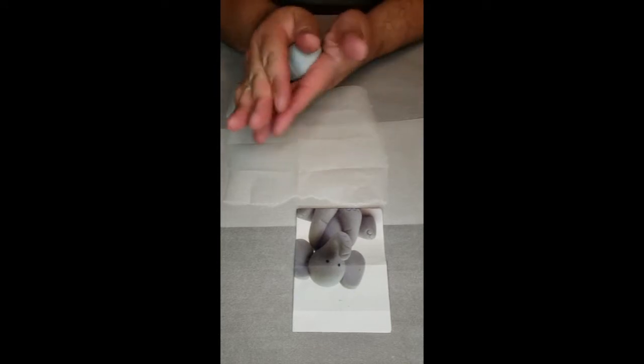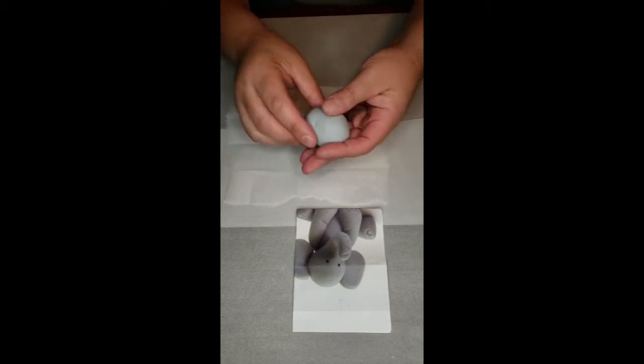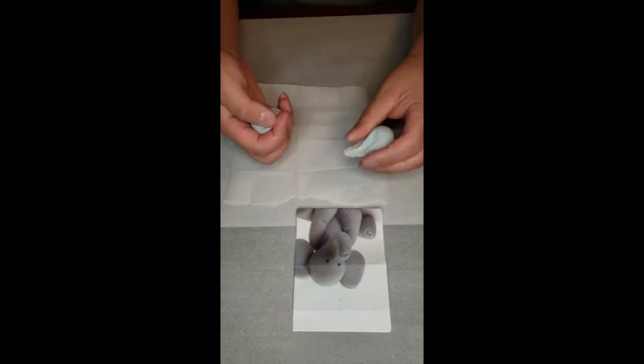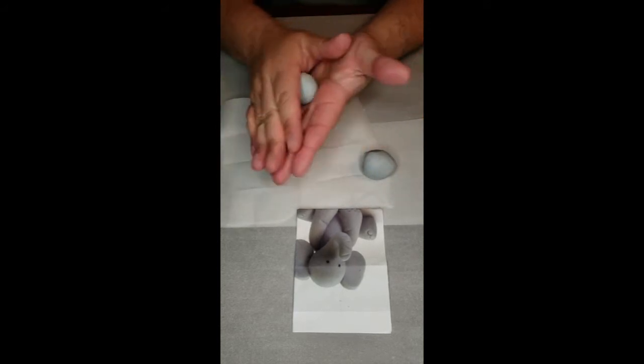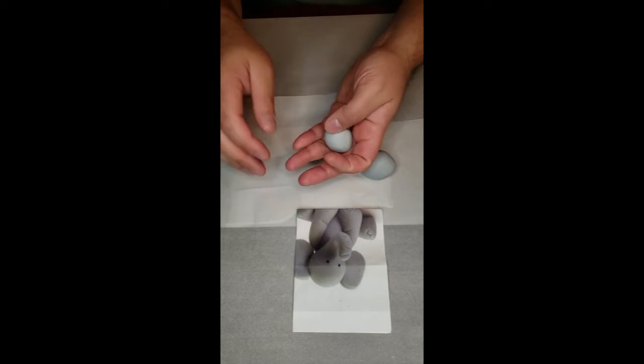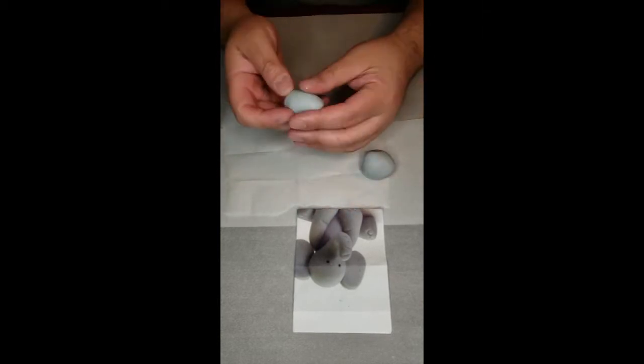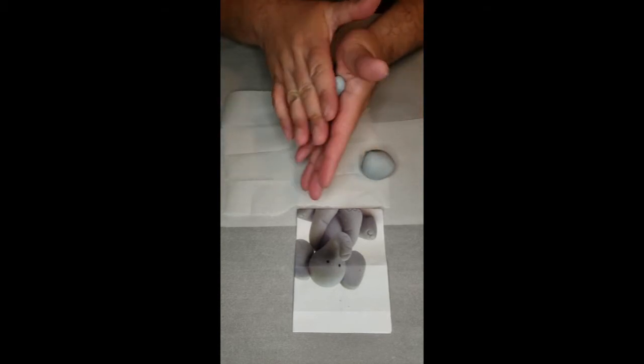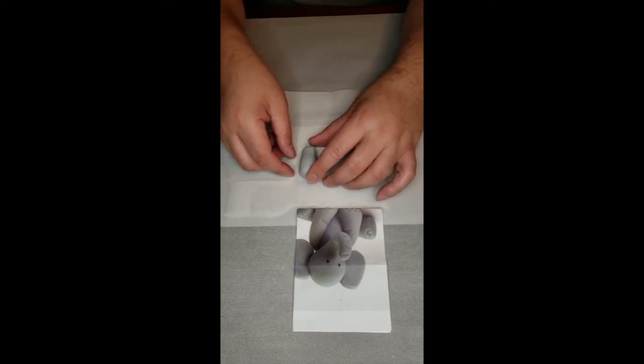I am going to turn it into a ball. And out of this ball, I am going to get just enough to make the body. So this is the shape you are looking for to make the body.